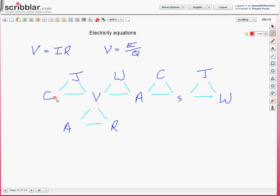So, C is Coulombs, J is joules, V is volts, W is watts, A is amps, C is Coulombs again, S is seconds, J is joules, W is watts, A is amps, V we've already got that one in, that's volts.